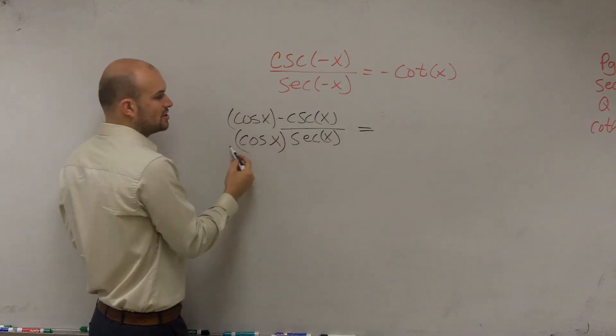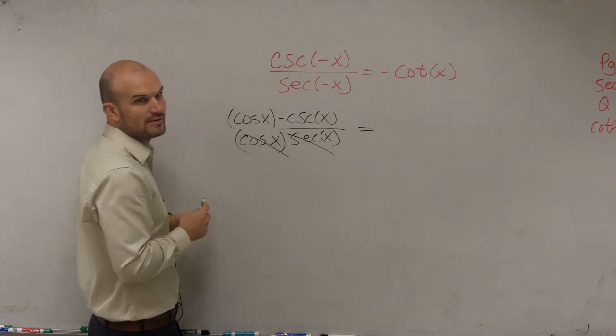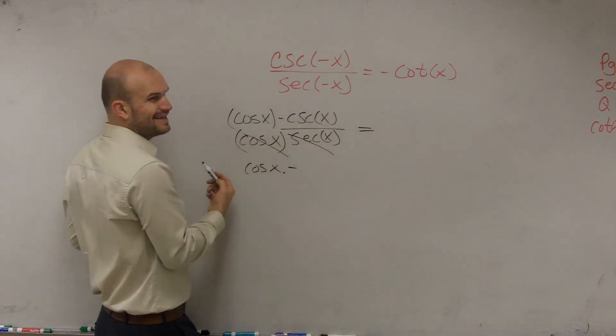So therefore, cosine of x times secant of x, those are reciprocal, so they multiply to 1. Therefore, I'm now left with cosine of x times negative cosecant.